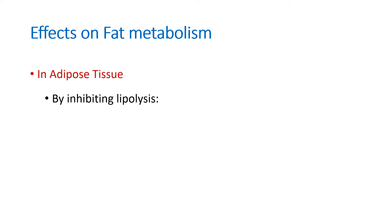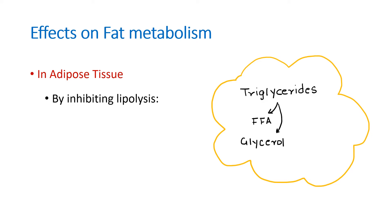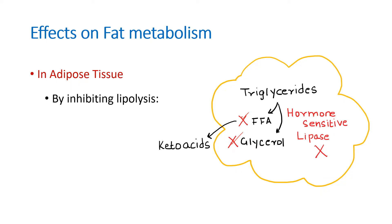In the adipose tissue, insulin has two effects. First, it inhibits lipolysis — the conversion of triglycerides to free fatty acids and glycerol. This step is normally stimulated by a hormone called hormone-sensitive lipase. Insulin inhibits lipolysis by inhibiting hormone-sensitive lipase. Additionally, since free fatty acids are usually converted to keto acids, this inhibition also reduces keto acid formation.